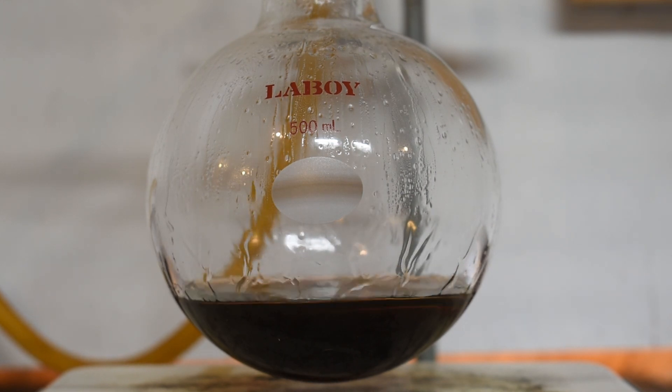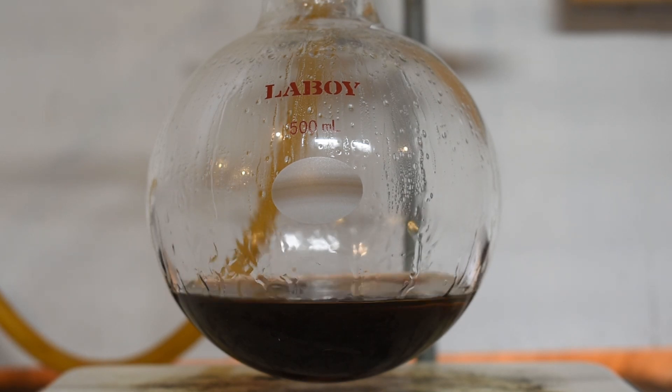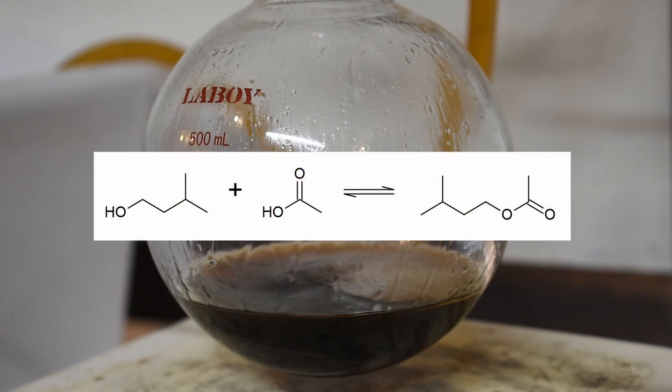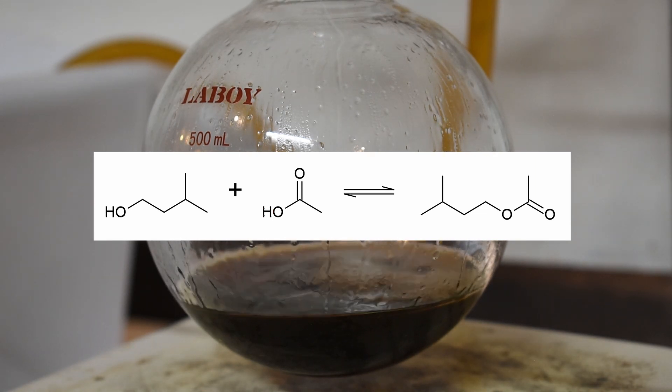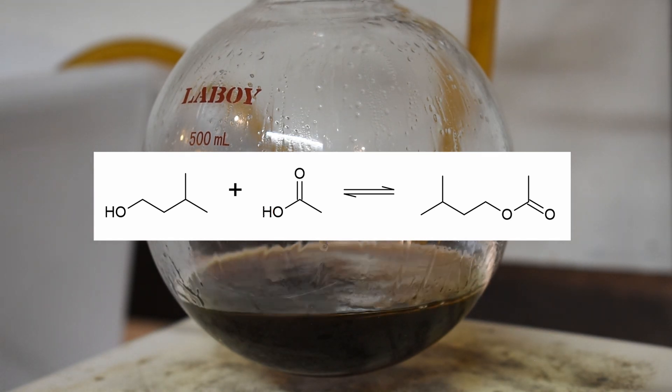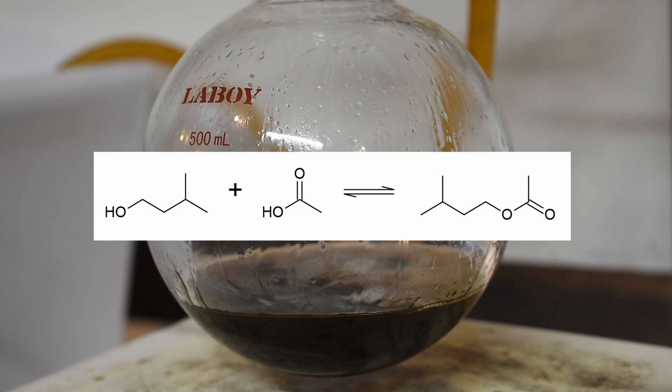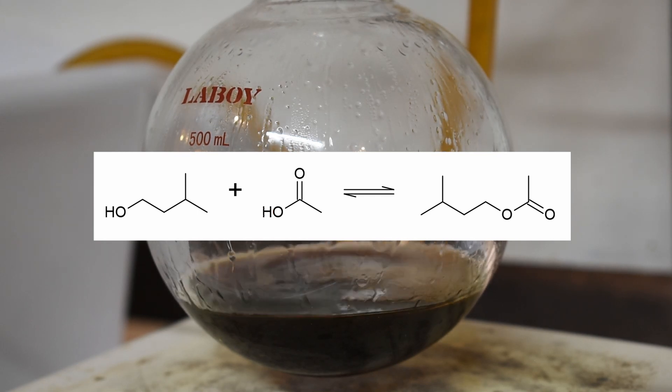I let the mixture reflux for about an hour, but looking back on it, I would probably give it a little bit more time. The reaction taking place here is just a simple Fischer esterification. The acetic acid and the isoamyl alcohol are basically just condensing together. The sulfuric acid with its low pH is helping drive the equilibrium towards our favored isoamyl acetate product.